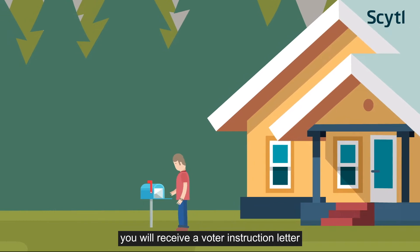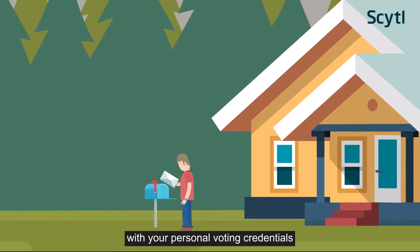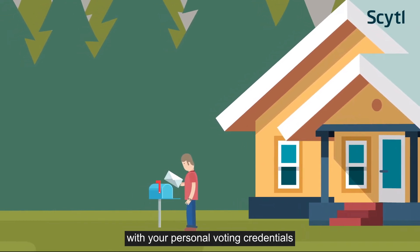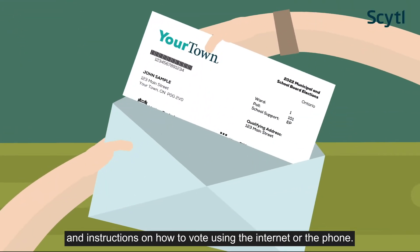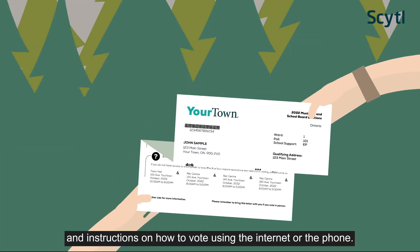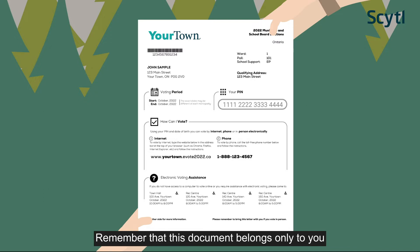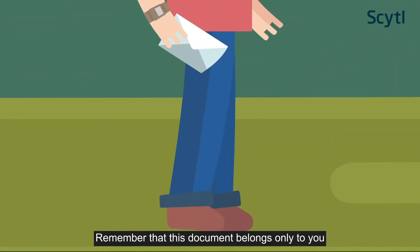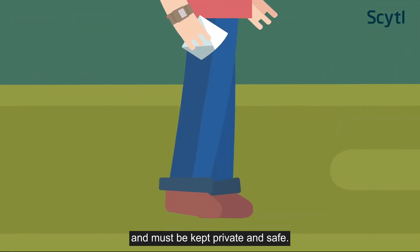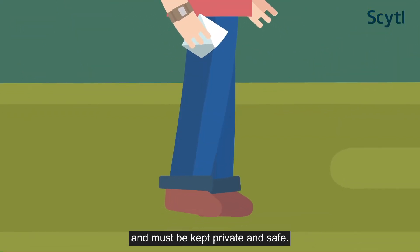Before the election, you will receive a voter instruction letter with your personal voting credentials and instructions on how to vote using the Internet or the phone. This letter will be delivered by Canada Post to your regular mailbox. Remember that this document belongs only to you and must be kept private and safe.